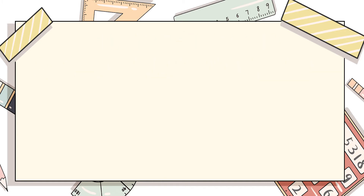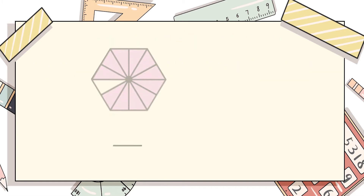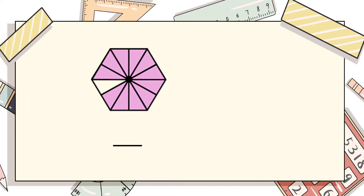If you can see the graphical representation in front of us, first we calculate the total number of parts. They are 1, 2, 3, 4, 5, 6, 7, 8, 9, 10, 11, and 12.